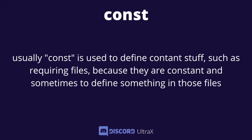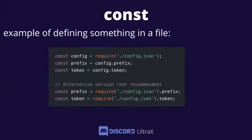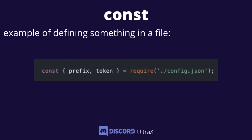Const is usually used for defining constant stuff, such as requiring files because they are constant. For example, to define a module: const discord = require('discord.js'). Another example — defining something from a file: const config = require('./config.json'), then const prefix = config.prefix and const token = config.token. There are alternatives listed as well but they're not really recommended. An easier shorthand is: const { prefix, token } = require('./config.json') — doing it all in one step.